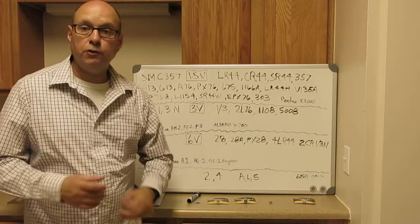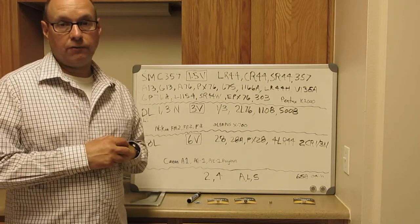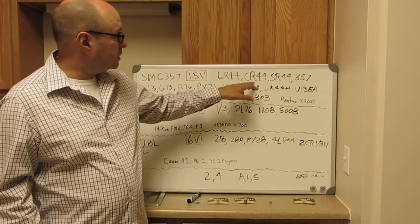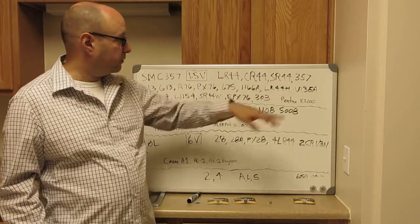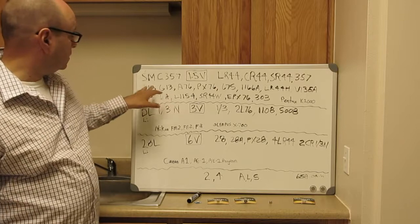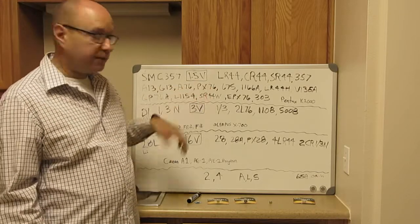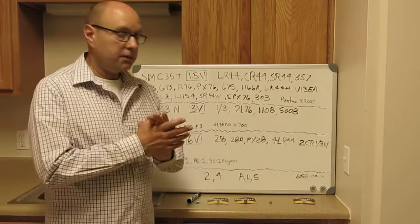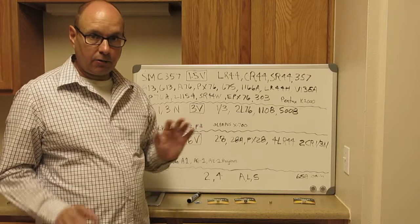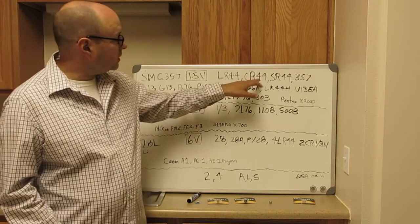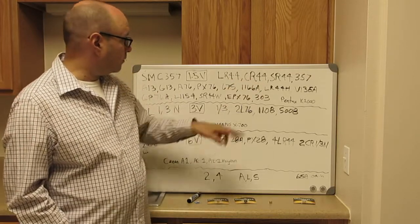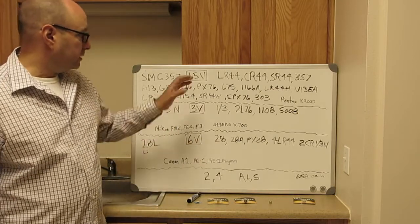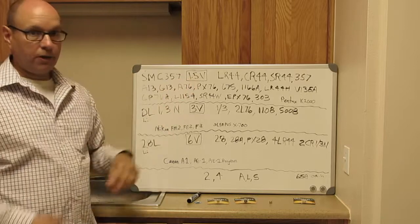It's a company called Renata and they make the SMC357 or just basically the 357 battery. It replaces all these - the LR44, CR44, SR44, 357, A76, PX76, and so forth. The main thing to realize is it's really the numbers. So you have the 44 style battery, 357 style battery, the 76 style battery.